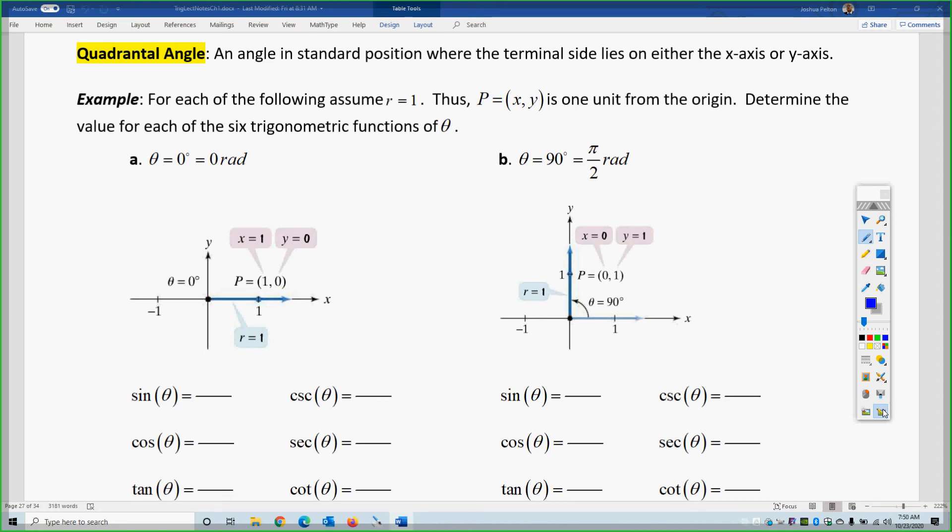If I use the formal definitions, sine is 0 over 1, otherwise y over r. And cosine is x over r, and tangent is y over x. So, if I flip these, I get 1 over 0, 1 over 1, and 1 over 0. Some students leave these as the solutions, these are not the solutions, you need to simplify them and specify.